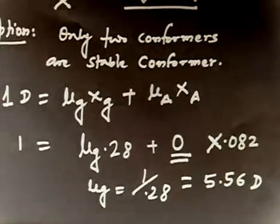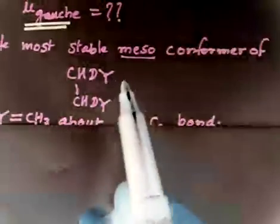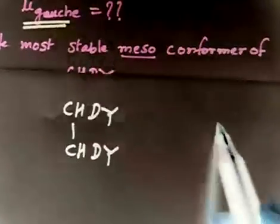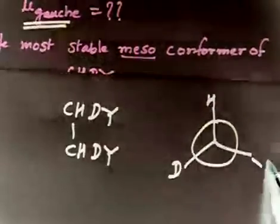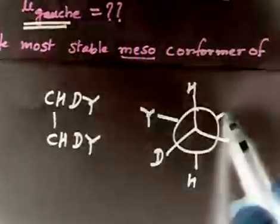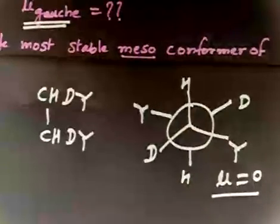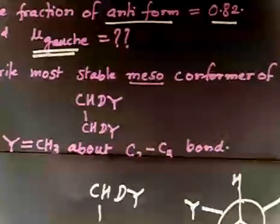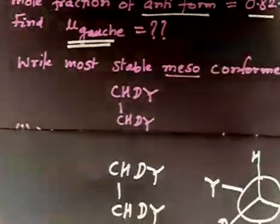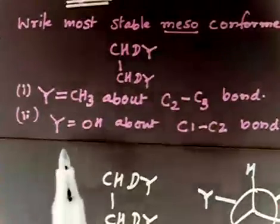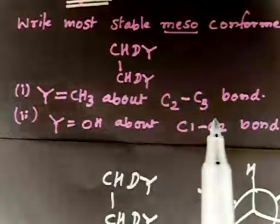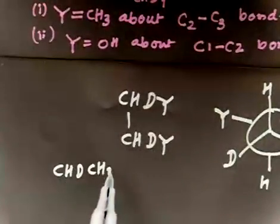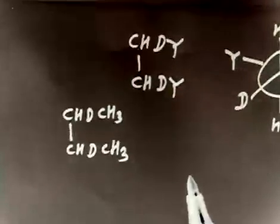Now let us discuss part B. It says write the most stable conformer of CHD-Y. This problem involves a CHDY system, which is why the anti conformer has zero dipole moment. When Y is CH3, you have CH3-CHD-CHD-CH3. You have to write the most stable meso conformer along the C2-C3 bond.